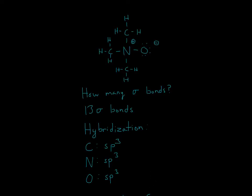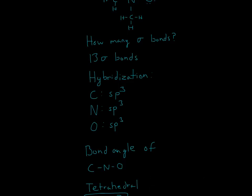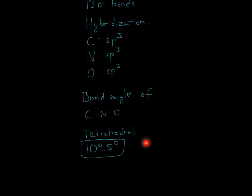For 4 bonds with no lone pairs, that would be a tetrahedral. This is just something you memorize. But for a tetrahedral, it will actually have a bond angle of 109.5 degrees. And that's it.